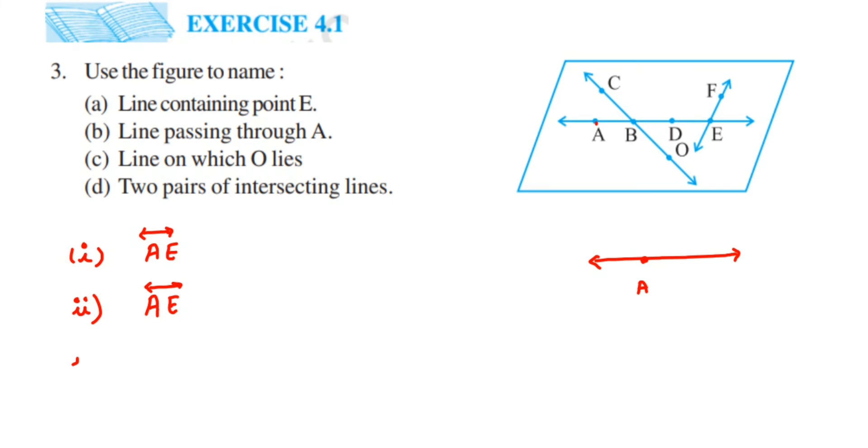The third question: they're asking line on which O lies. So O is - where is O? O is here, and on which line does it lie? You can see it's only on this line. So it will be line OC, or you can write down CO. Anything - OC or CO, both are the same. You can write down either way. So this will be line CO, and on top of that you should represent this line here.